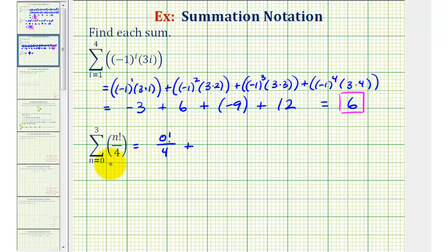The second term is when n equals one, so we'd have one factorial divided by four. For the third term, n is equal to two, so we'd have two factorial divided by four.